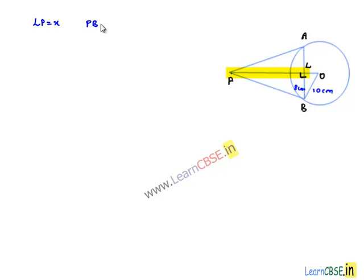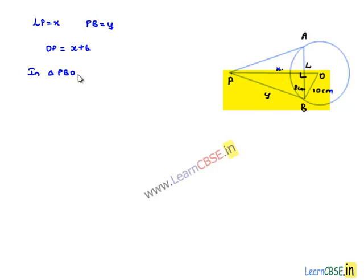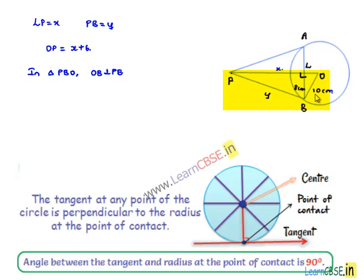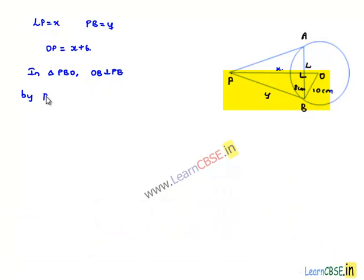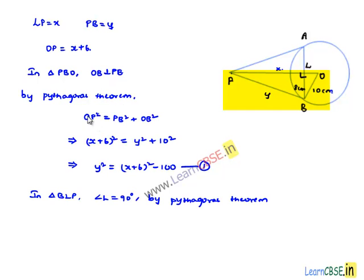Let us assume LP equals x and PB equals y. Therefore OP equals LP plus LO, that is x plus 6. In triangle PBO, OB is perpendicular to PB since the tangent is always perpendicular to the radius at the point of contact. By Pythagoras theorem, OP² equals PB² plus OB², so (x+6)² equals y² plus 10². From this, y² equals (x+6)² minus 100. Let this be equation number one.